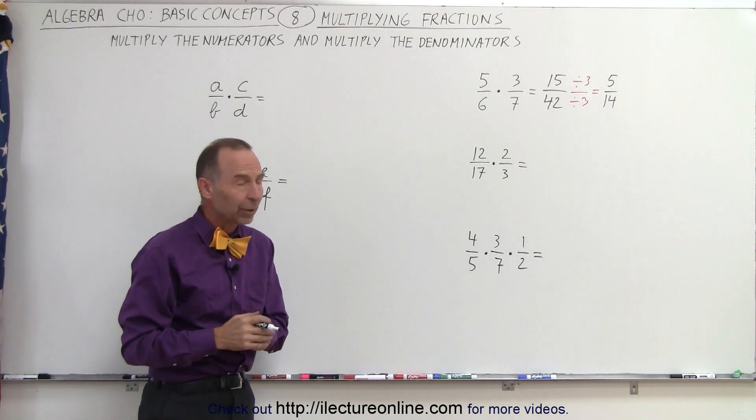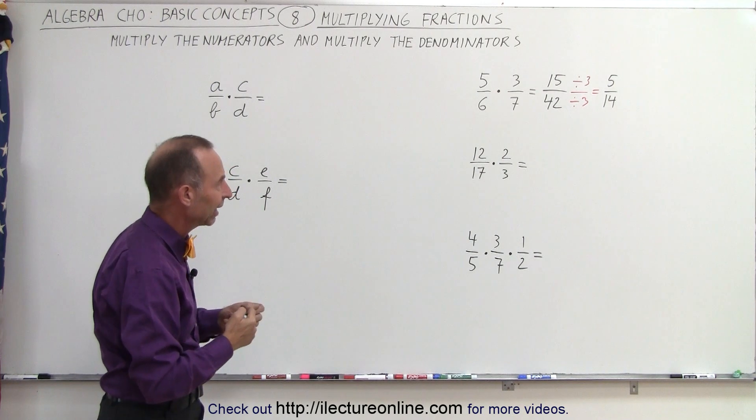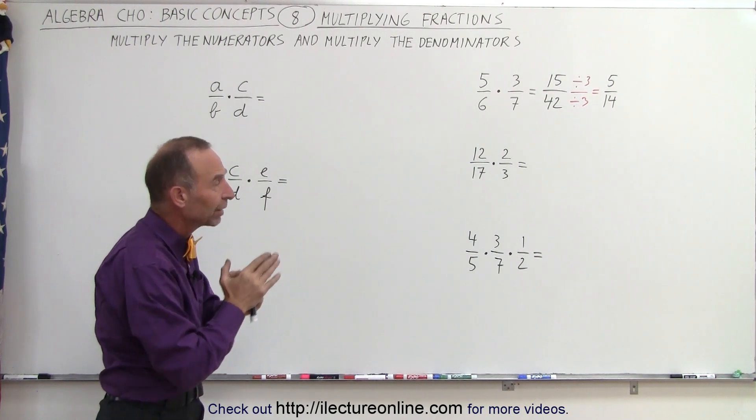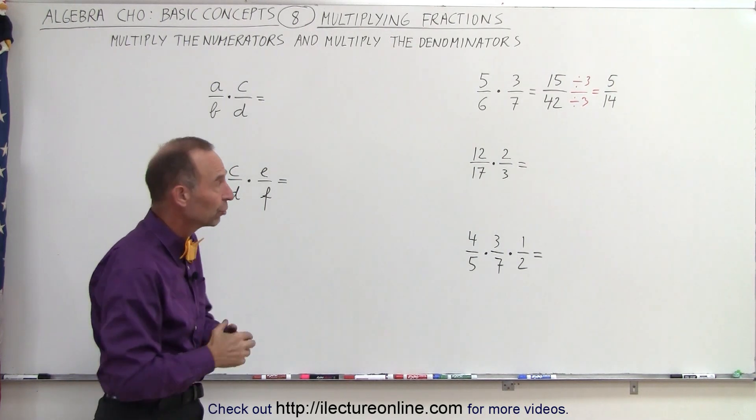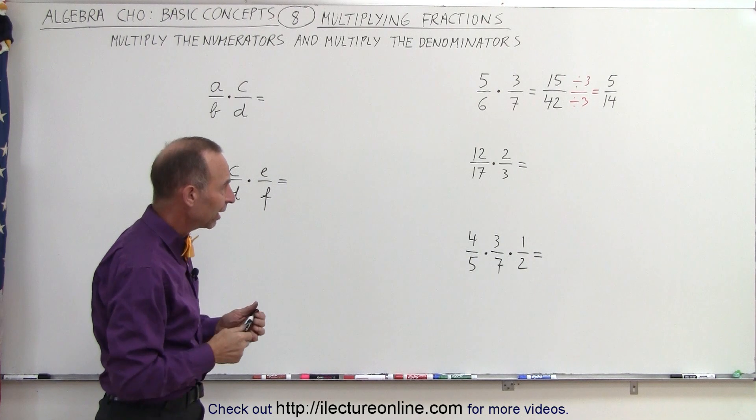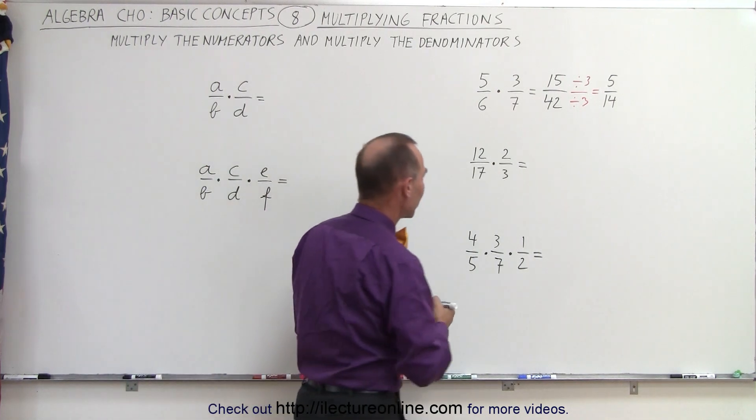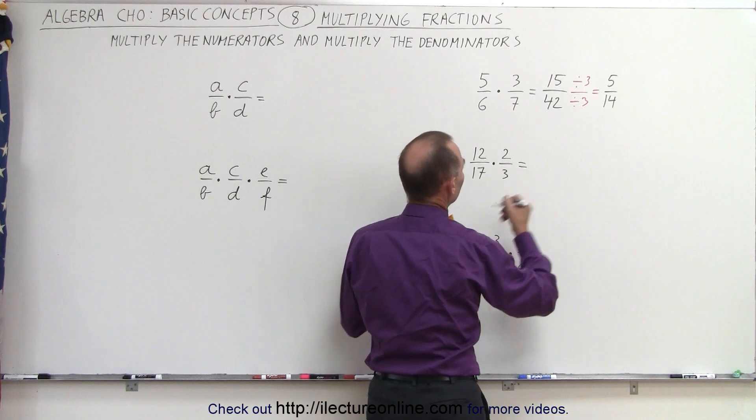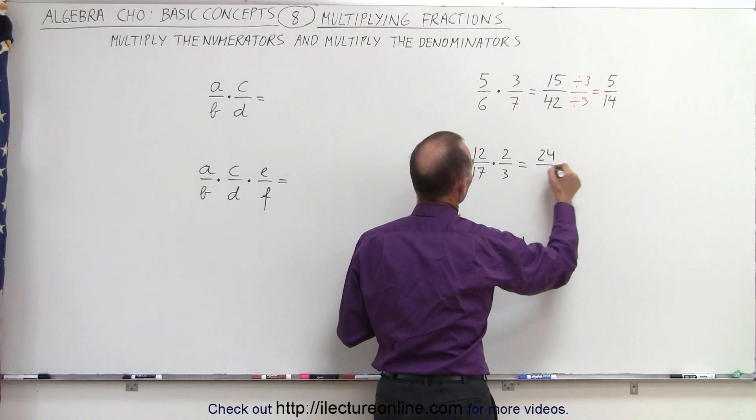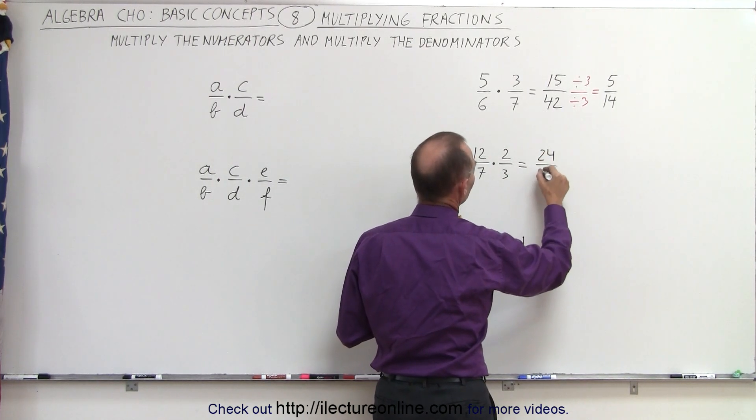That's how we can find the final answer. After we multiply them together, we still may want to reduce the fraction. Same with the next one. Again, multiplying is very straightforward. 2 times 12 equals 24, and 3 times 7 equals 51.